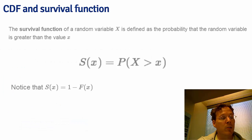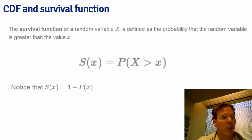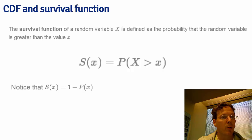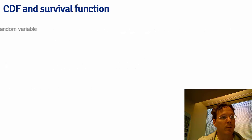The survival function is 1 minus the distribution function. So instead of the probability of being less than a value, it gives the probability of being greater than that value.